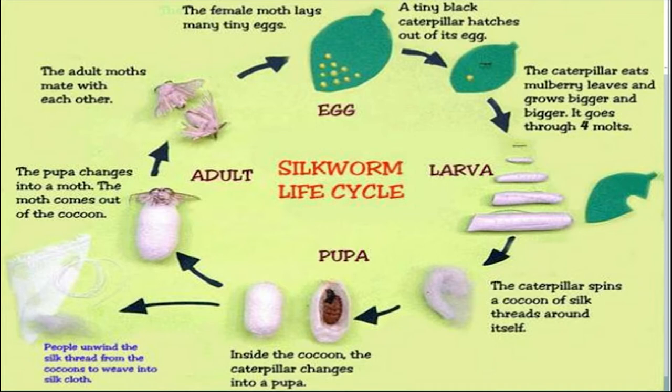The caterpillar spins a cocoon of silk threads around itself. The larva then turns into a pupa inside the cocoon, where the caterpillar changes into a pupa. People unwind this silk thread from the cocoons to weave into silk cloth.